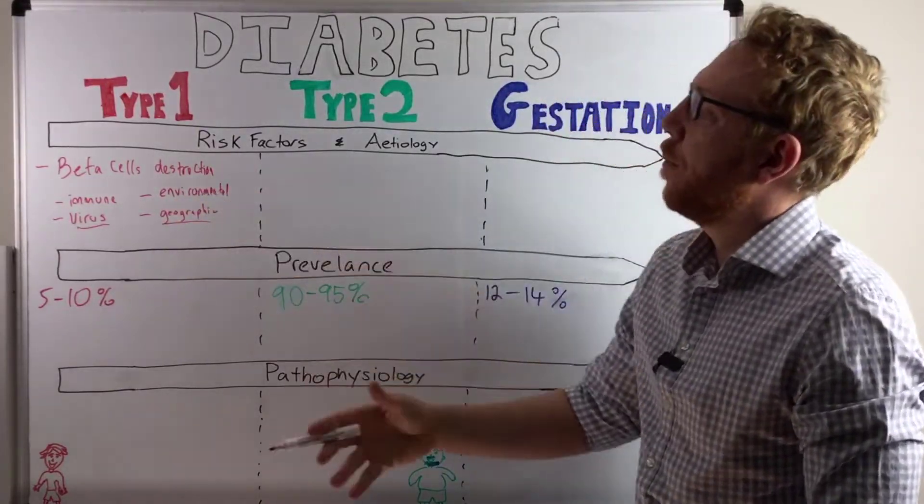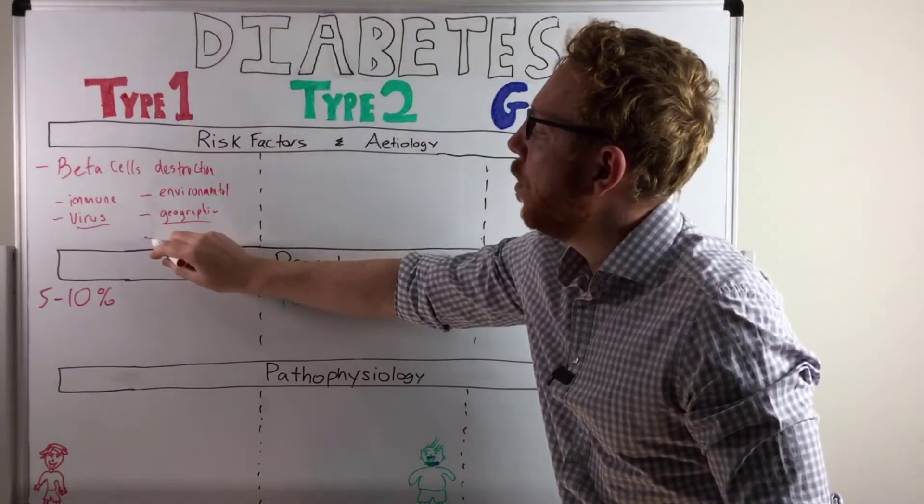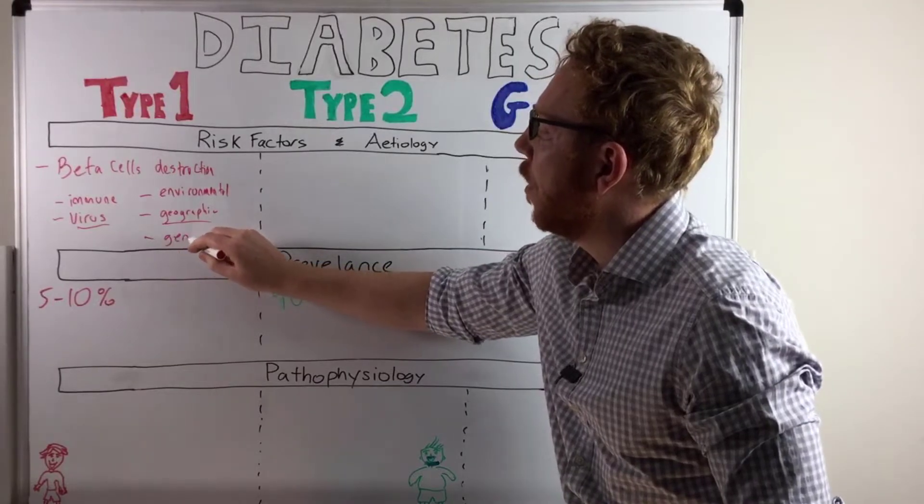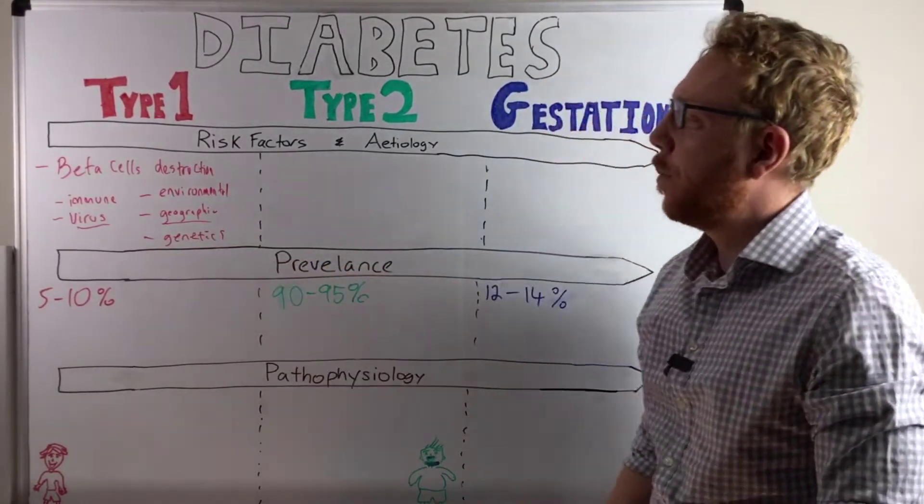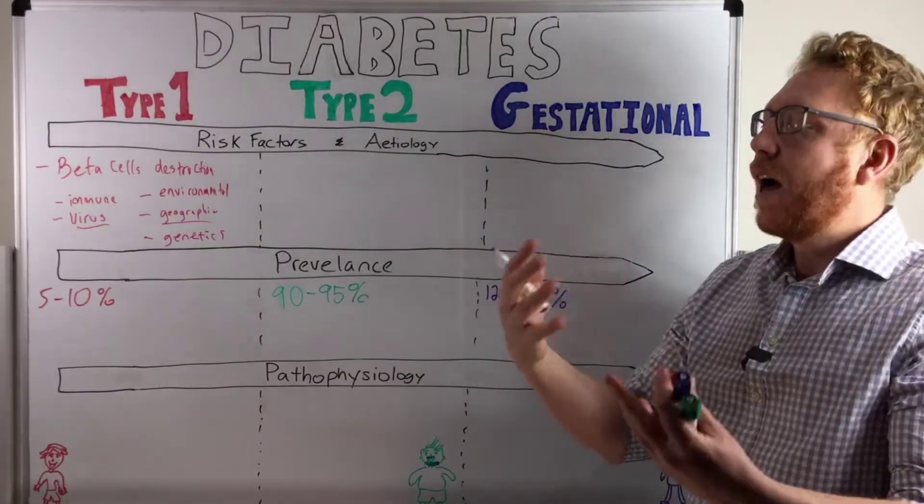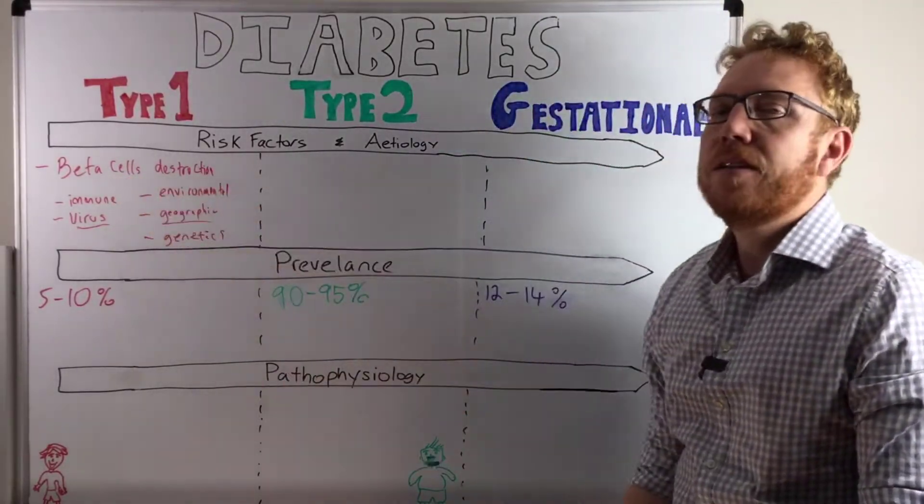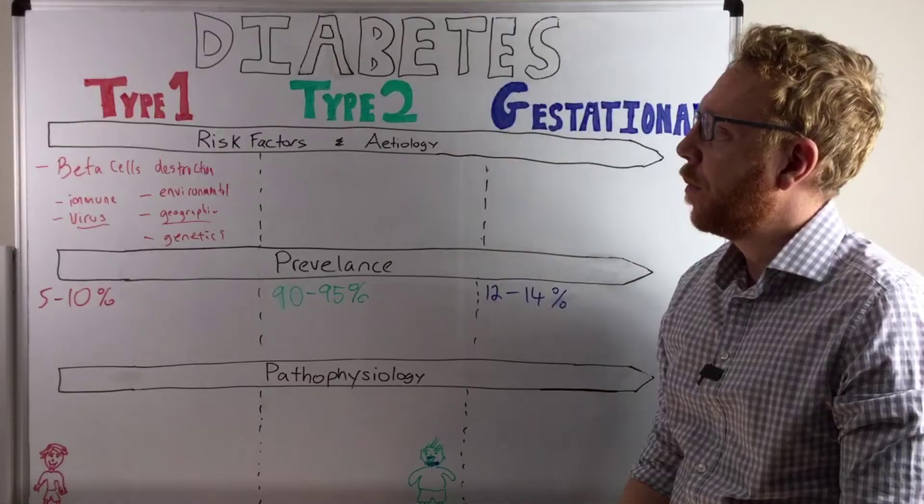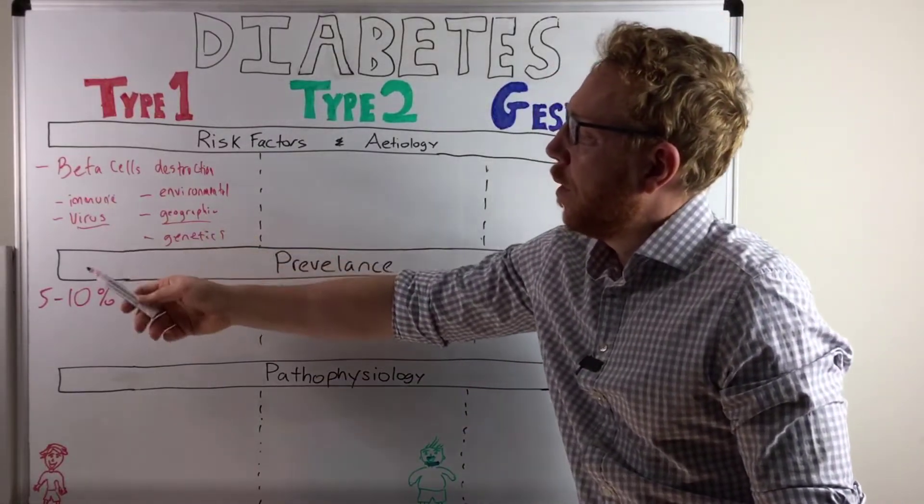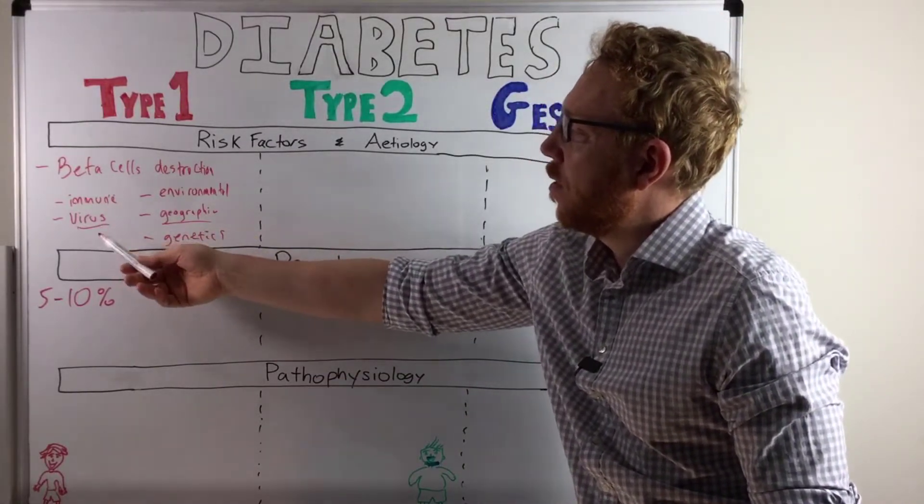There's a small degree of genetics. So probably with the genetics, it predisposes one to a more higher likelihood of having a beta cell vulnerability to destruction. But immune seems to be the strongest risk factor, as is viruses.